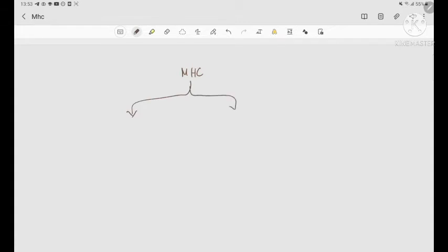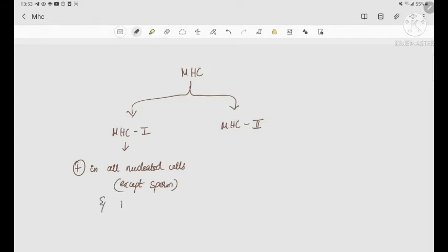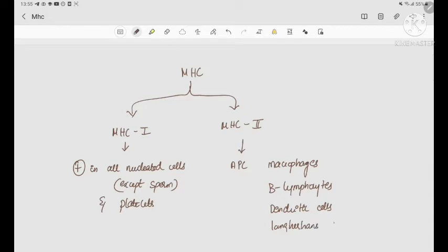Major histocompatibility complex is divided into MHC 1 and MHC 2. MHC 1 is present in all nucleated cells except sperms and platelets. MHC 2 is present on the antigen presenting cells, like macrophages, B lymphocytes, dendritic cells, and also the Langerhans cells. These are all the antigen presenting cells on which MHC 2 is seen.